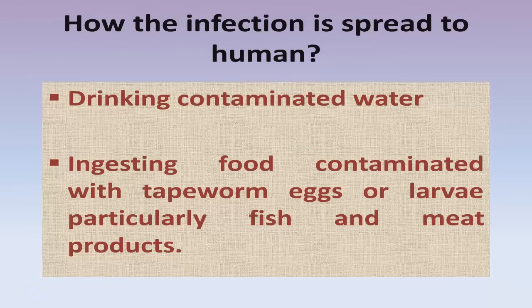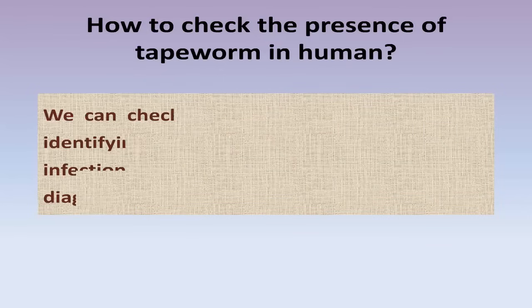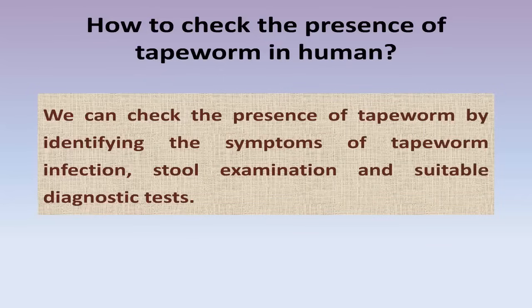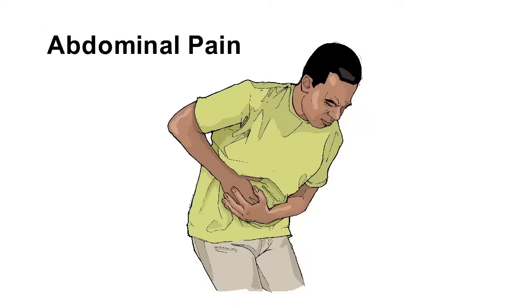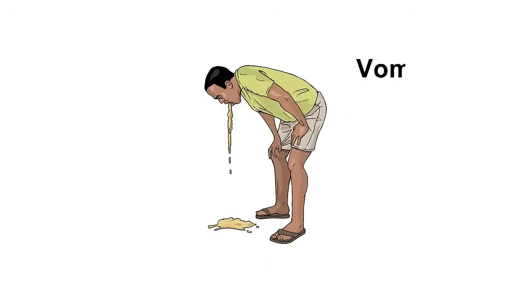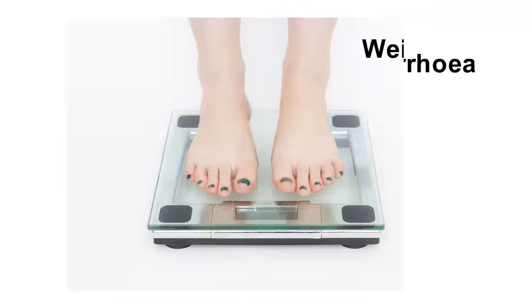How to check the presence of tapeworm in humans? We can check by identifying the symptoms of tapeworm infection, stool examination, and suitable diagnostic tests. The symptoms of tapeworm infection include abdominal pain, vomiting, diarrhea, weight loss, weakness, and nausea.